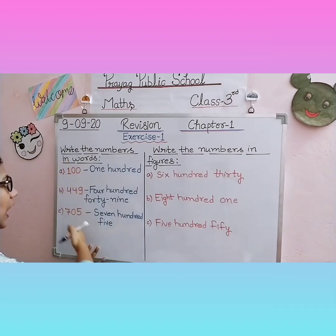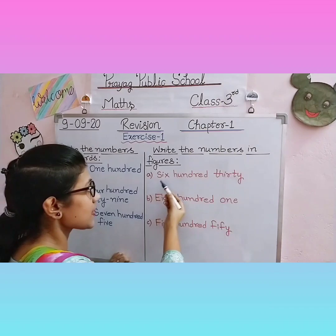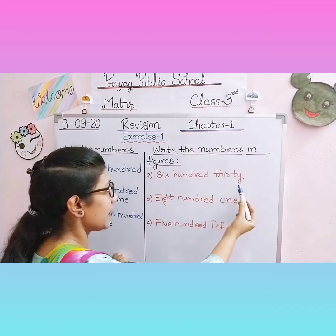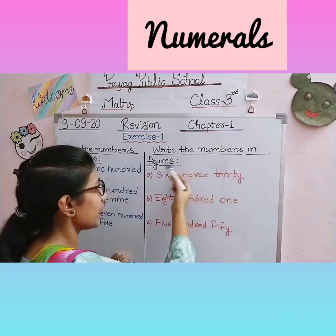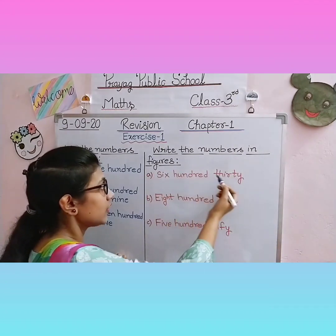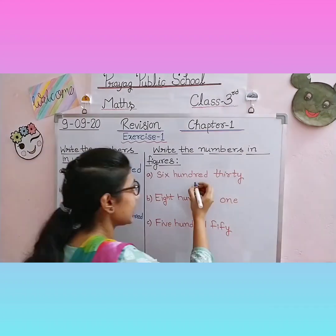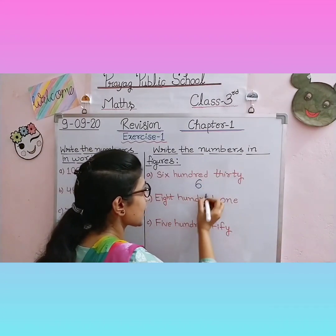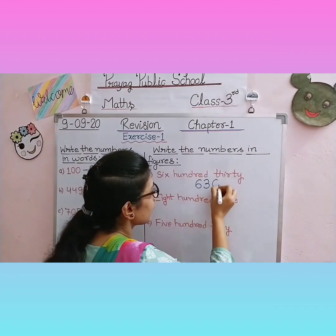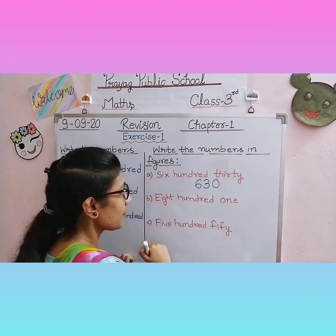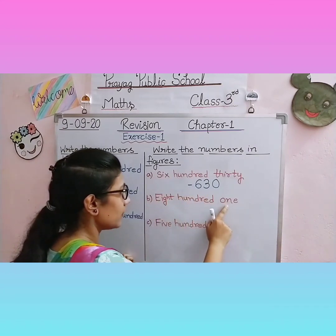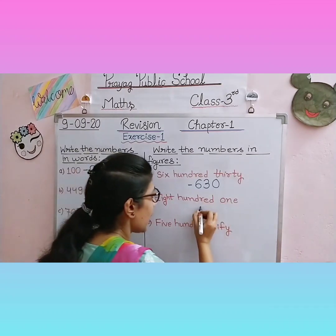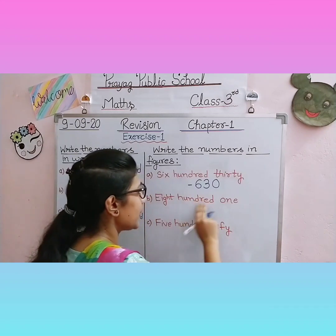In this way, whatever numbers are given, you will write them in words. Numbers in figures — now the numbers in the question are given in words, and we have to write them in figures, i.e., in numerals. Whether the question says numerals or figures, both mean the same thing. Six hundred thirty — six will go in the hundreds place, then thirty. We have written six hundred thirty — this is its figure form. Now question B: eight hundred one. Eight goes in the hundreds place. There is no digit in the tens place.